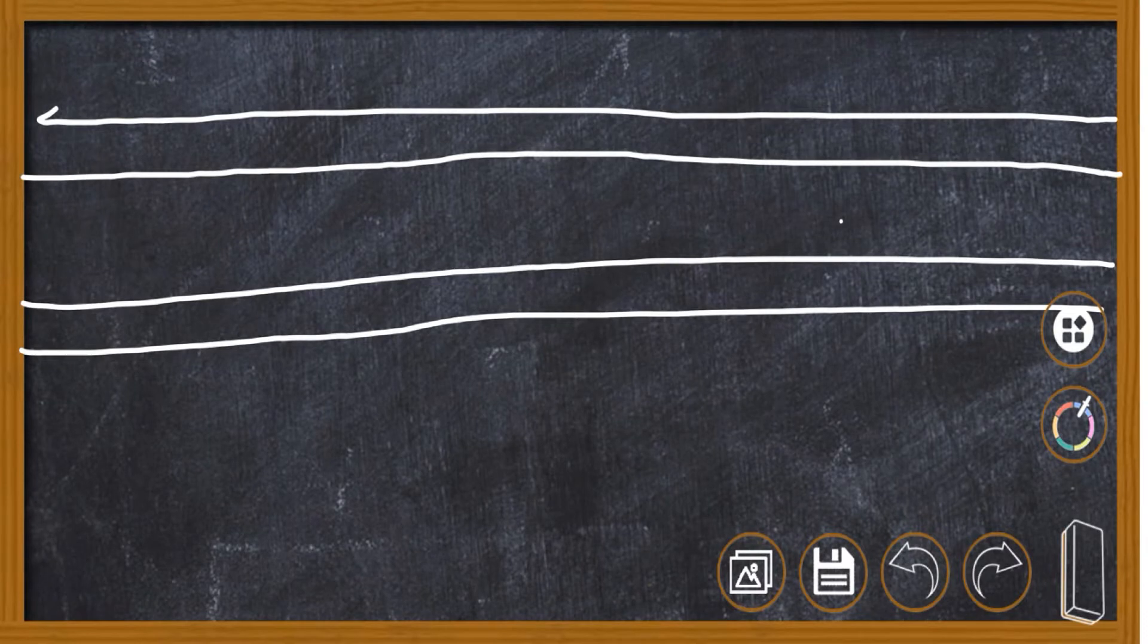Children, let's learn to write letter G. Writing G is very, very easy. You all know to write letter 3. Right? Now, what we are going to do? We are going to write letter 3 in Ulta position. Okay? See, like this.